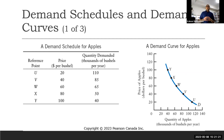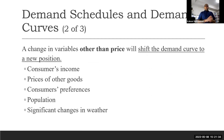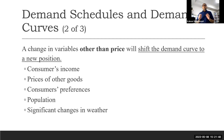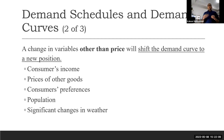For those new to economics, remember that the demand curve is always downward sloping because the relationship between price and quantity demanded is negative. When the price changes, quantity demanded will increase or decrease along that curve — this is called a movement along the curve. But there is also a possibility that other factors which can influence demand may change.